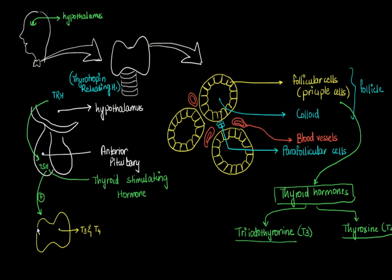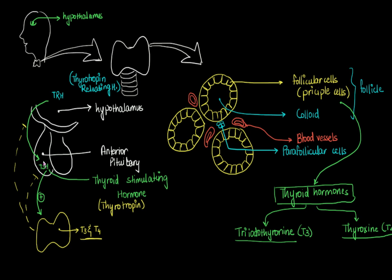T3 and T4 have a negative, or controlling, effect on both the anterior pituitary and the hypothalamus. That means if there is excess of T3 and T4, it will reduce the formation of thyroid stimulating hormone from the anterior pituitary and thyrotropin releasing hormone from the hypothalamus. The thyroid stimulating hormone is also called thyrotropin — that's why TRH causes the anterior pituitary to release thyrotropin, which stimulates the thyroid to release T3 and T4.